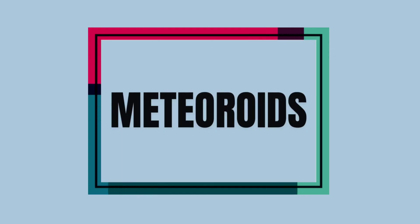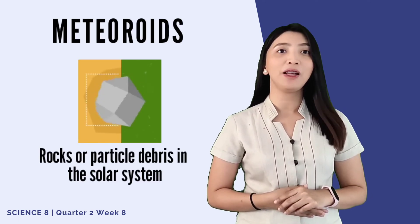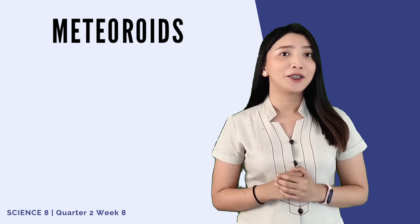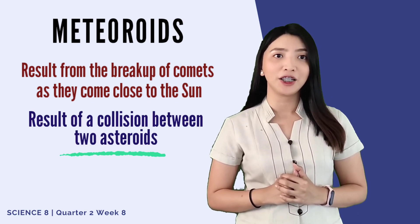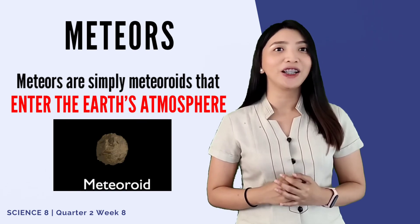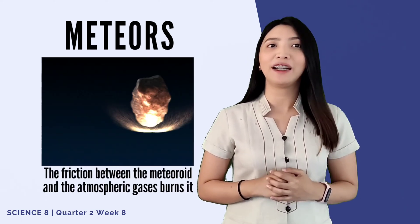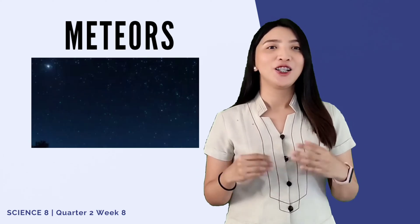Now let's discuss meteoroids. What is the difference between meteoroids, meteors, and meteorites? Meteoroids are rocks or particle debris in the solar system that range in size from dust to boulders — most meteoroids are about the size of a pebble. Some meteoroids result from the break-up of comets as they come close to the sun, while others are thought to be the result of a collision between two asteroids. When we say meteors, they are simply meteoroids that enter the Earth's atmosphere. As it passes through the atmosphere, friction between the meteoroid and Earth's atmospheric gases burns it to the point where it glows and becomes visible to our eyes, which we know better as shooting stars.